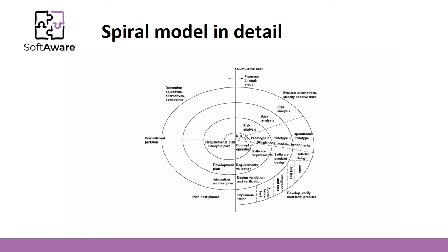Let's start from the very beginning. First, we define the initial objectives. We do the risk analysis of the defined objectives and create the first prototype. That allows the understanding of the concept of software operation — no software is created at this stage. Now that we understand the concept of operation, we set initial requirements and plan the next iteration. During the next iteration, the objectives are revised and updated. Another risk analysis is performed, taking into account the outcomes of the first iteration. A prototype is developed if necessary, allowing us to analyze and validate the requirements. In the last phase, the development plan is created and the next iteration is planned.